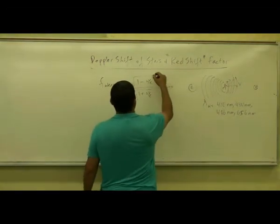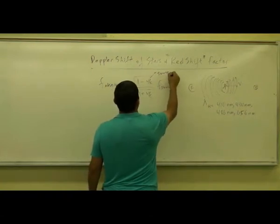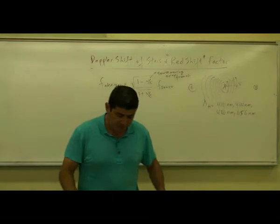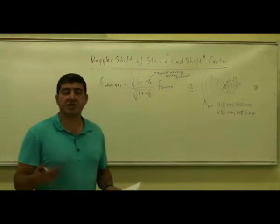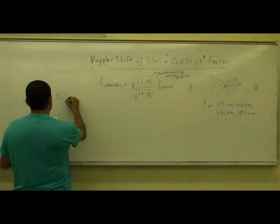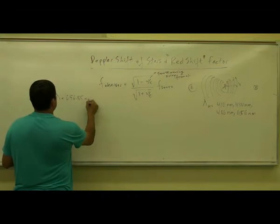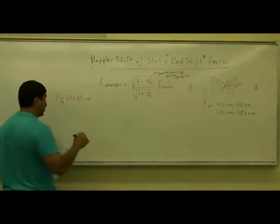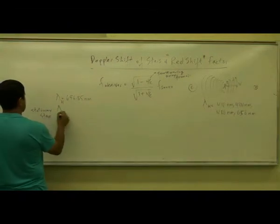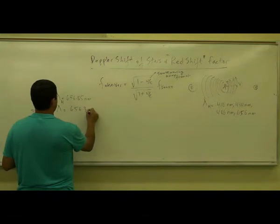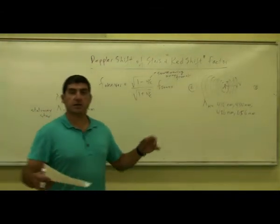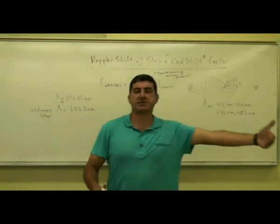This formula is for the source moving away from us. Let's say you have a certain star moving away from us, and we study its spectra and discover it has a Balmer line of 656.85 nanometers. We know that the Balmer line for a stationary star is 656.3 nanometers. The wavelength has been enlarged, which is proof that the star is moving away from us.